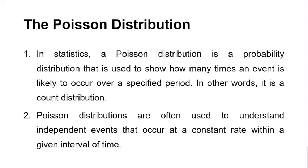The Poisson distribution is the last probability distribution. It is a distribution used in statistics to show how many times an event is likely to occur within a specific period. In other words, it is a count distribution. Poisson distributions are often used to understand independent events that occur at a constant rate within a given interval of time.